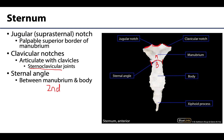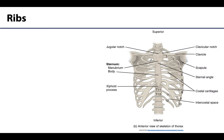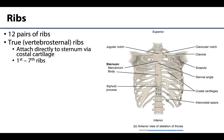Moving to ribs: there are 12 pairs, so 24 ribs in total, with three main categories. Ribs one through seven are referred to as true ribs because each one has its own costal cartilage that directly articulates with the sternum. Many of these articulate with the body of the sternum, with some of the more superior ones articulating with the manubrium.